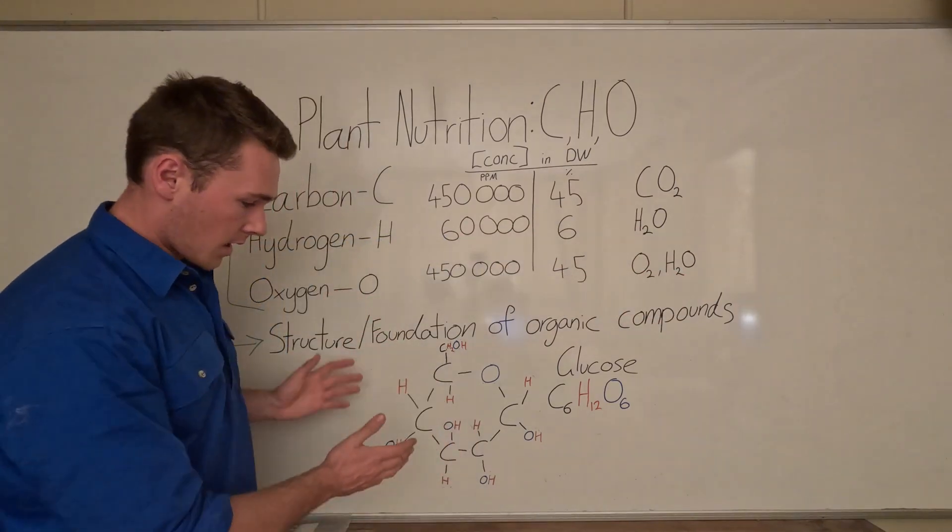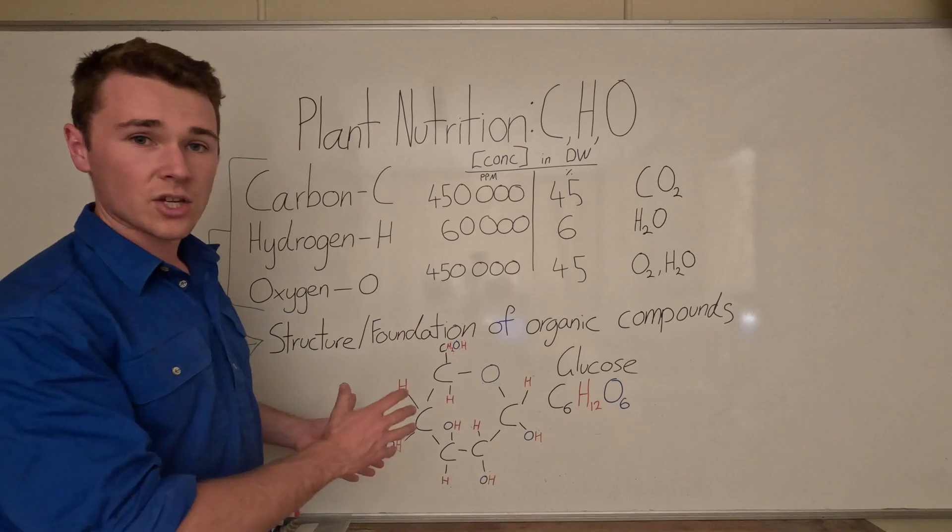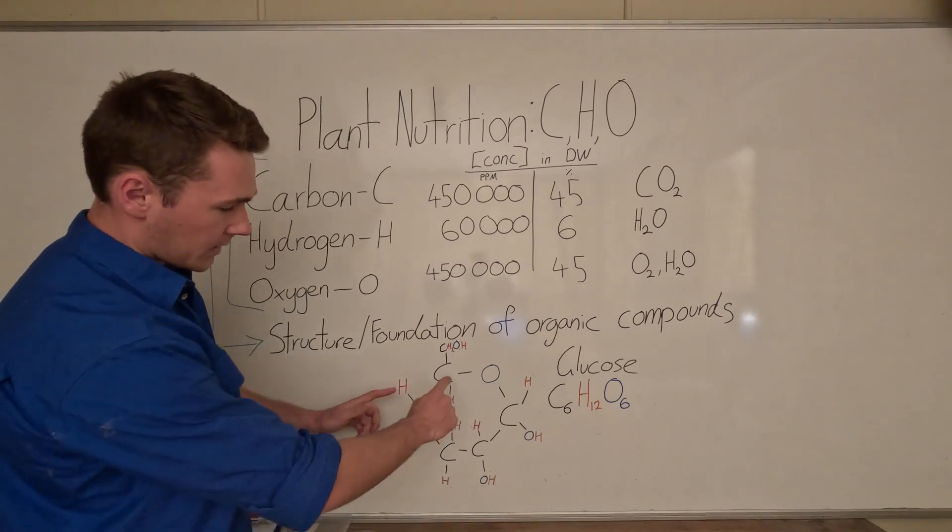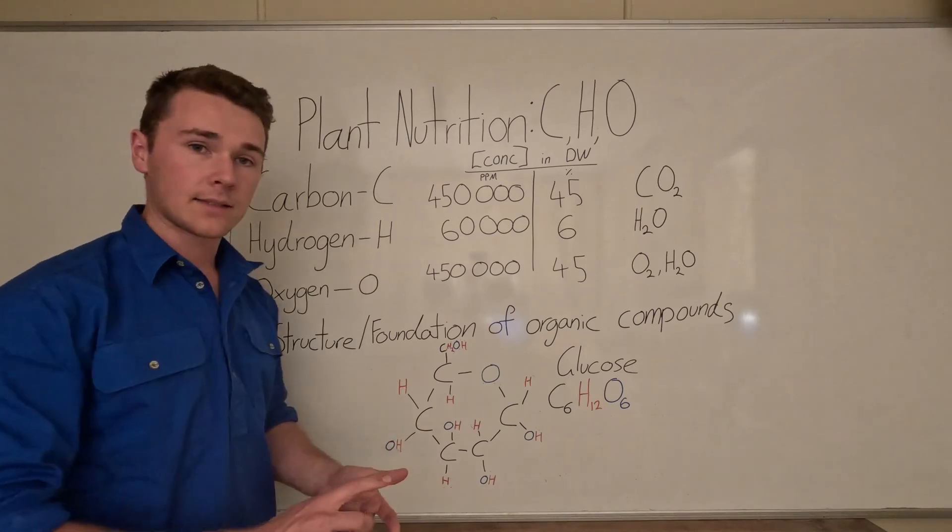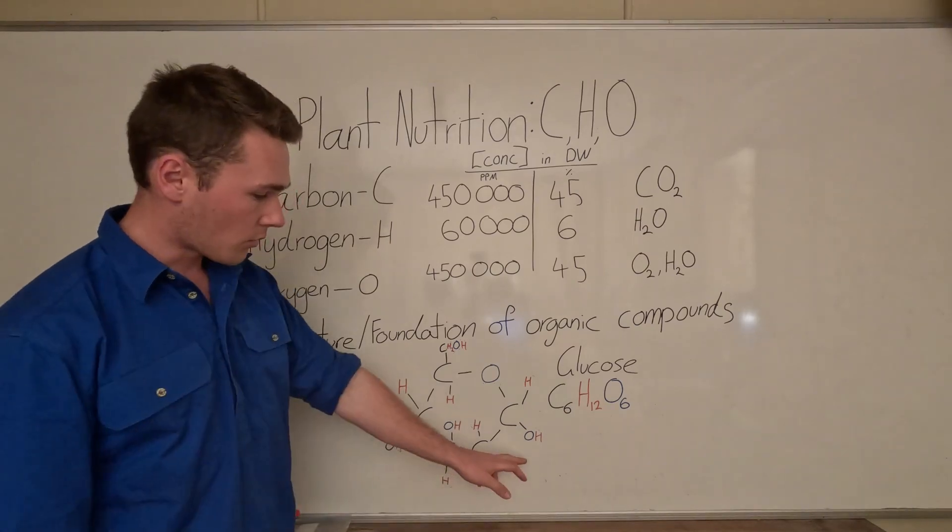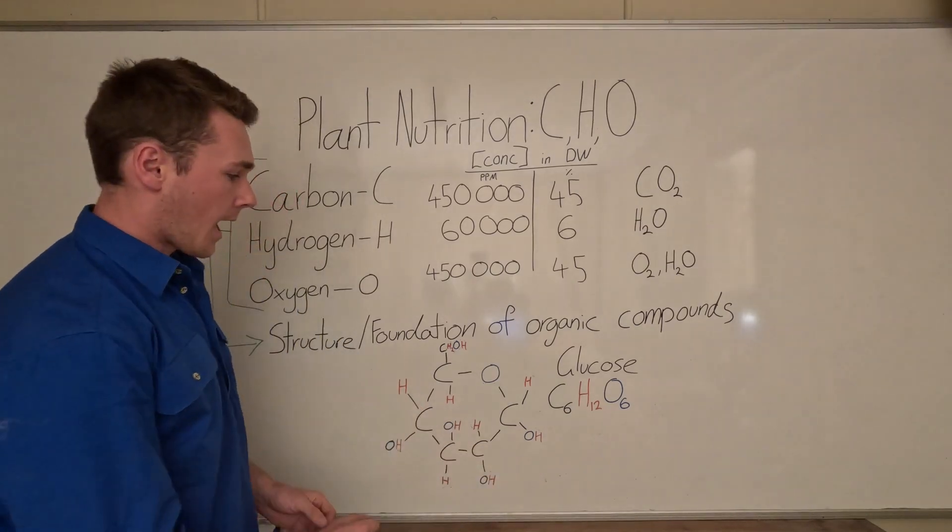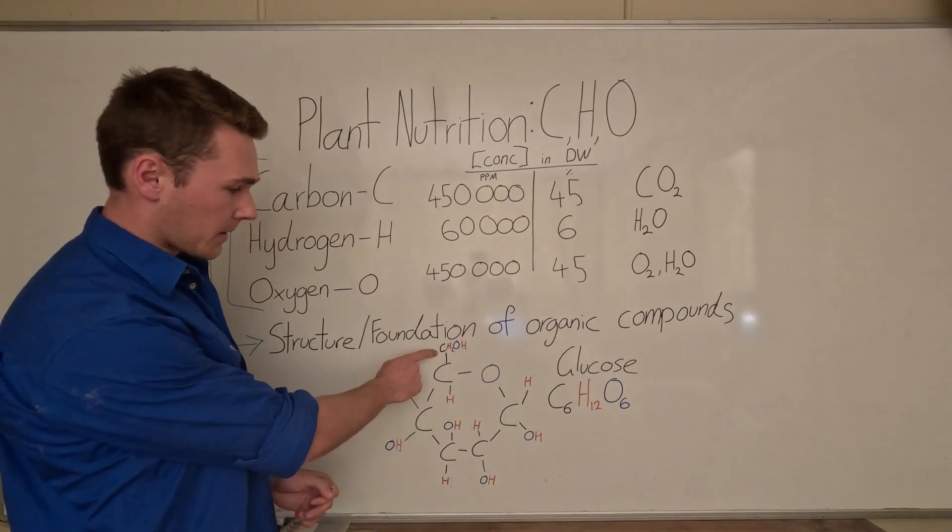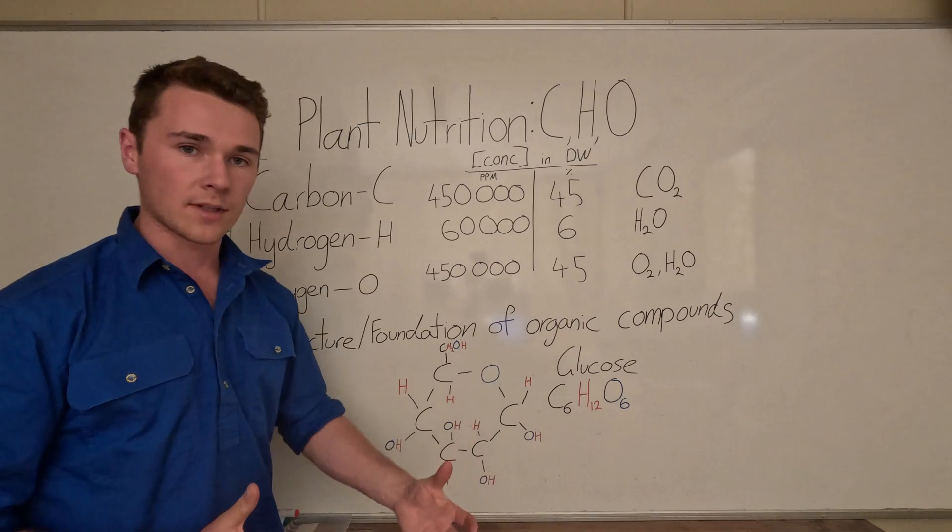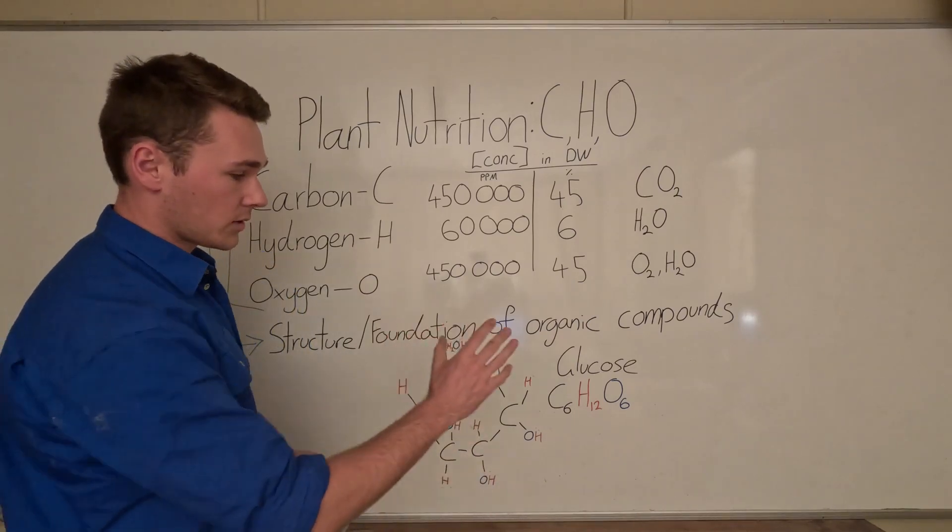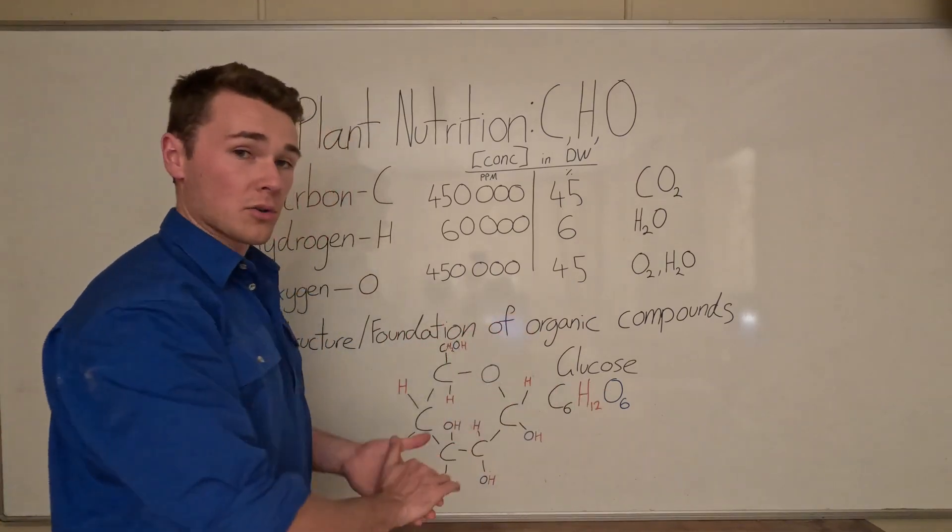And so you can see here, this is the scientific structure of glucose. So you have basically a carbon ring with a bit of oxygen in there. Each of the carbons are hydrogen or an alcohol group which is OH. And then there's a funny little branch up here. And that's really what glucose is. So there's no other nutrients involved here. It's purely just carbon, hydrogen, and oxygen.